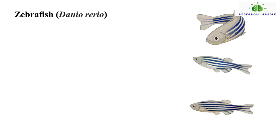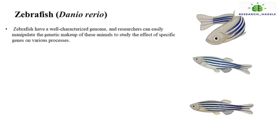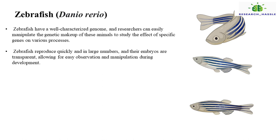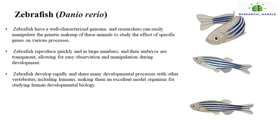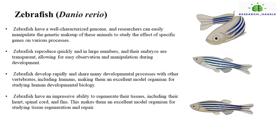Seventh, Zebrafish. Zebrafish have a well-characterized genome, and researchers can easily manipulate the genetic makeup of these animals to study the effect of specific genes on various processes. Zebrafish reproduce quickly and in large numbers, and their embryos are transparent, allowing for easy observation and manipulation during development. Zebrafish develop rapidly and share many developmental processes with other vertebrates, including humans, making them an excellent model organism for studying human developmental biology. Zebrafish also have an impressive ability to regenerate their tissues, including their heart, spinal cord, and fins, making them an excellent model for studying tissue regeneration and repair.